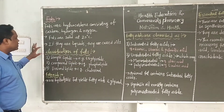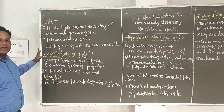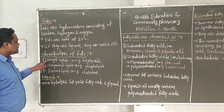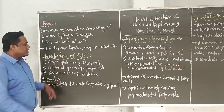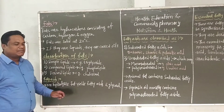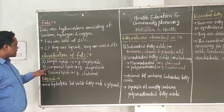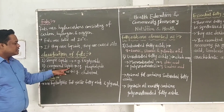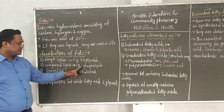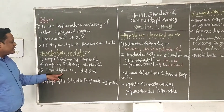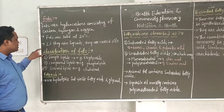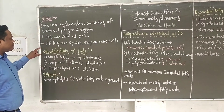Now let's see the classification of fats. The first is simple lipids, for example triglycerides. The second is compound lipids, the example is phospholipids. And the third is derived lipids, the example is cholesterol.